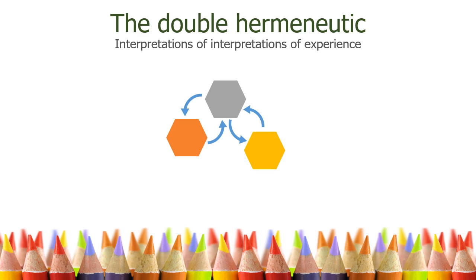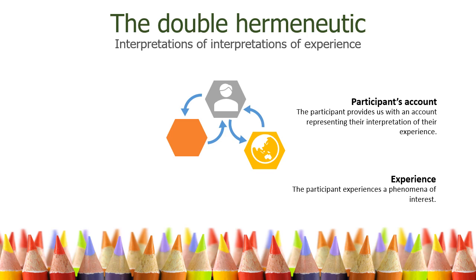There's a lot of interpretation involved in IPA. We recognise this within the double hermeneutic. We begin with an experience — this is where something happens to us within our life world. We get information about that phenomena through our senses and we use that information to understand our experience. When we collect data, we're not able to go and live that experience from the participants' perspective. Even if we were to observe them engaging in a phenomena, we would only be able to record our observations of them. Instead, we usually collect accounts of the phenomena from the participant. This account represents their interpretation of the phenomena and is the first level of abstraction away from the phenomena itself as lived.